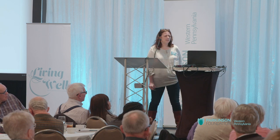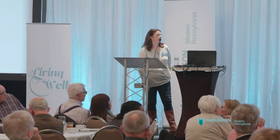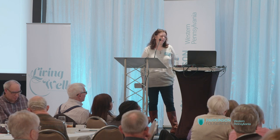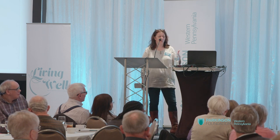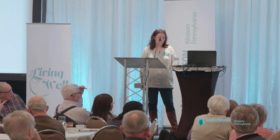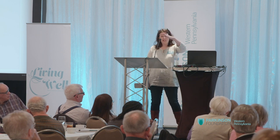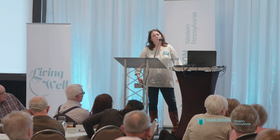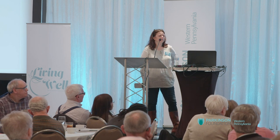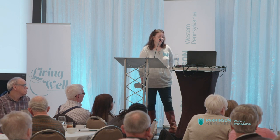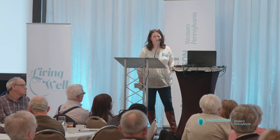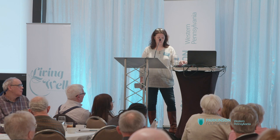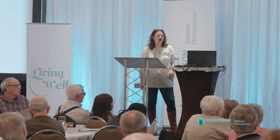For restless legs and periodic limb movements of sleep, we may start with supplements — if you're iron deficient, we may give you iron, and some people even need iron infusions. Magnesium can help as well and is over-the-counter. Sometimes we use dopaminergic medications — any Parkinson's medication. One issue is augmentation, where those symptoms can get earlier and earlier during the day, and some people may notice them in their arms too. We can use anticonvulsants like gabapentin and benzodiazepines like clonazepam. We usually try opiates last and try to stay away from them as much as possible. Periodic limb movements of sleep are usually best controlled with clonazepam.